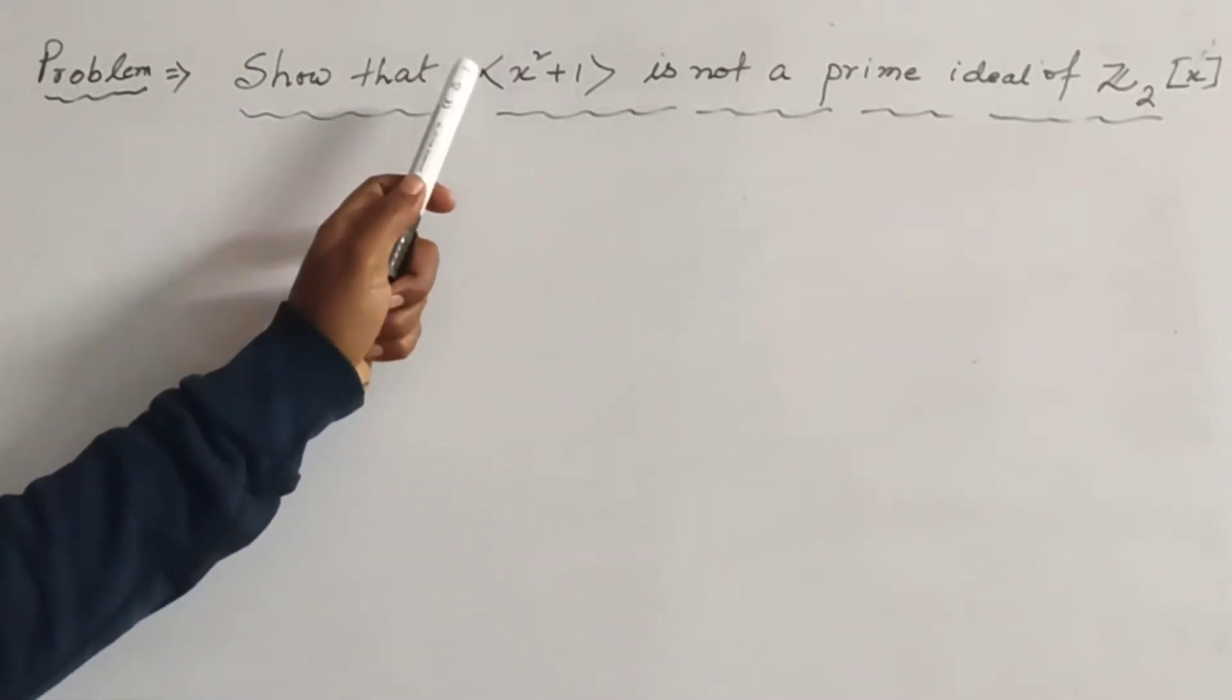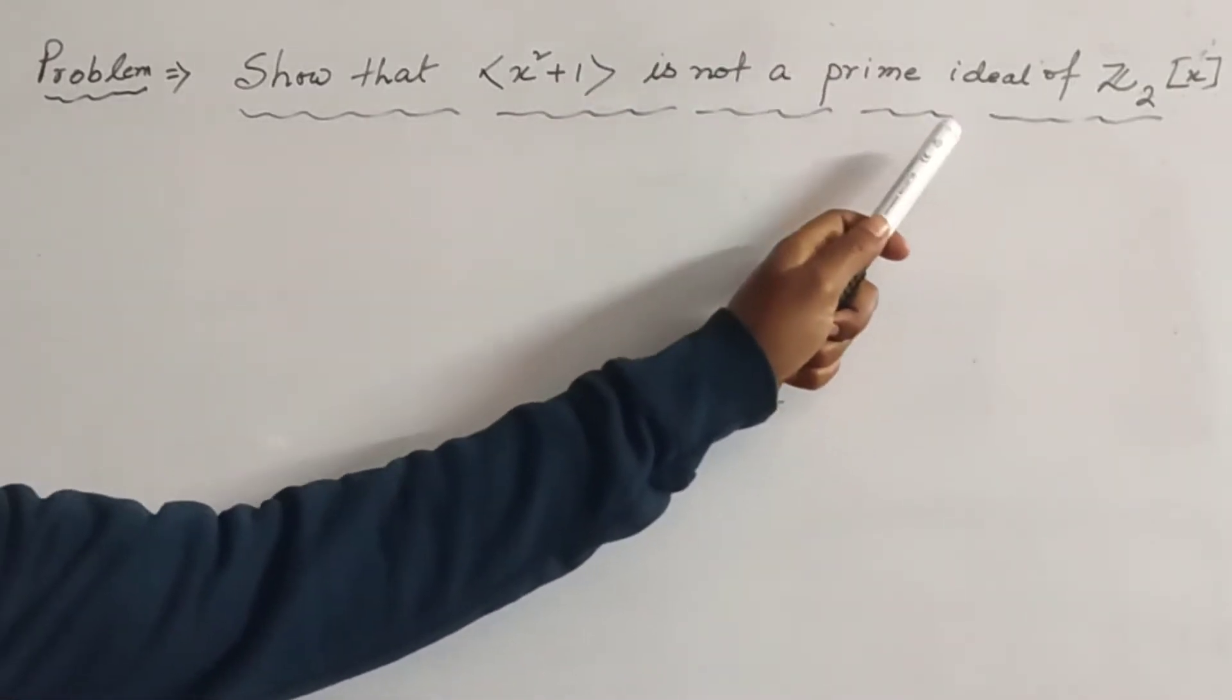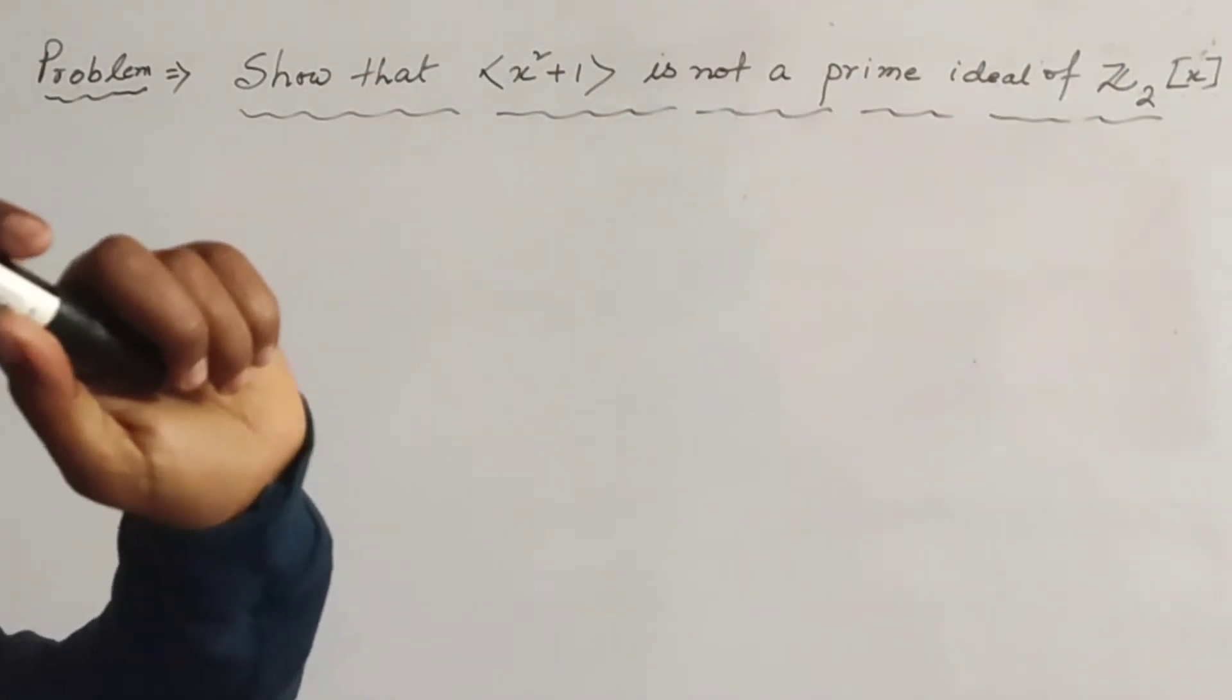Show that the principal ideal generated by x² + 1 is not a prime ideal of Z₂[x].